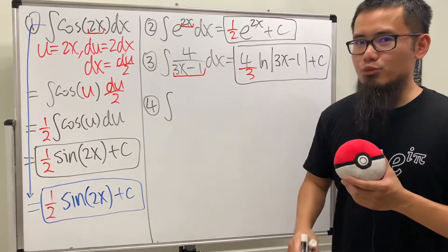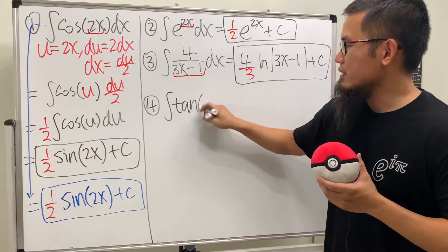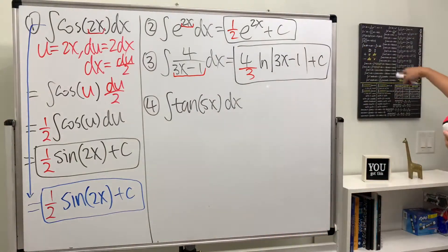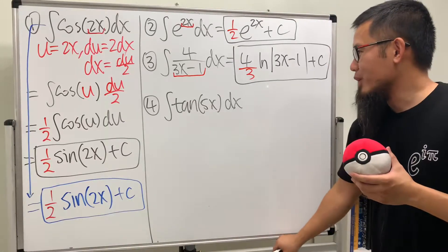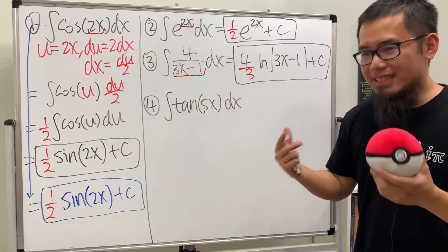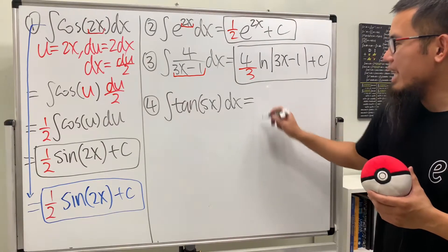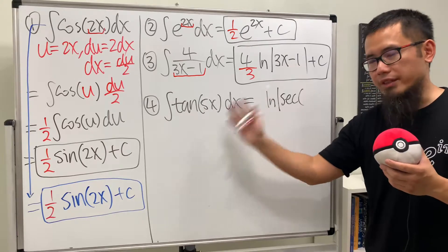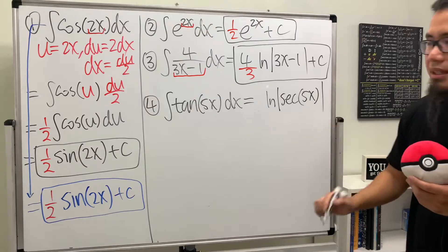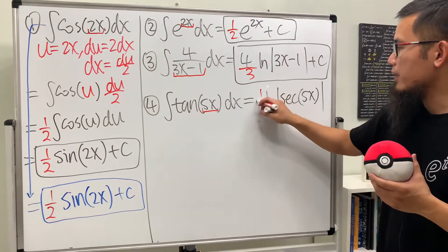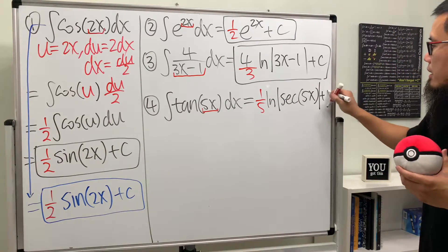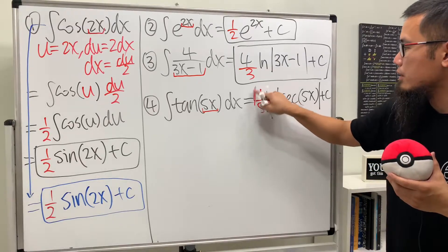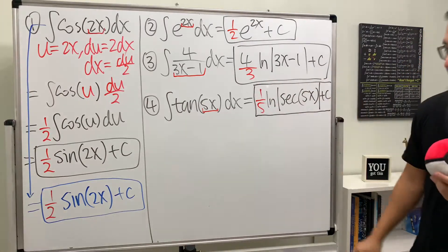Number 4: the integral of tangent of 5x. As a reminder, when we integrate tangent that's a standard result — we get ln of the absolute value of secant. The derivative of the input 5x is just 5, so write down ln|sec(5x)| and divide by 5. That is it — (1/5)ln|sec(5x)| plus C.